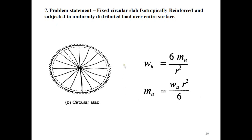The seventh problem statement is a fixed circular slab, isotropically reinforced, subjected to uniformly distributed load over its entire surface. The formulas for moment and load are similar to the polygonal case — the same equations apply. You can see radius r, the fixed support creating yield lines radiating to infinity, and a circular negative yield line (dotted) due to the fixed support. This covers how to find moments and loads for different slab shapes using yield line theory.